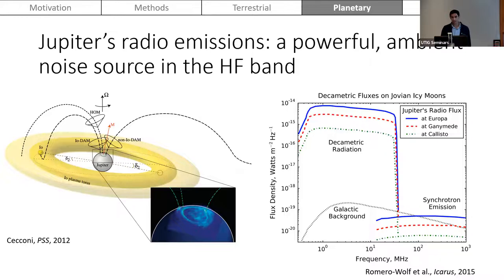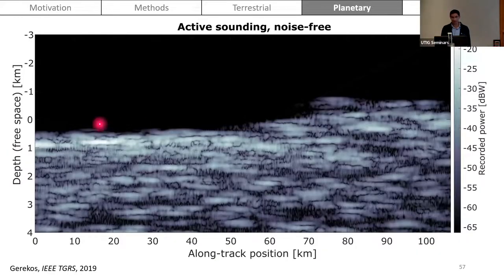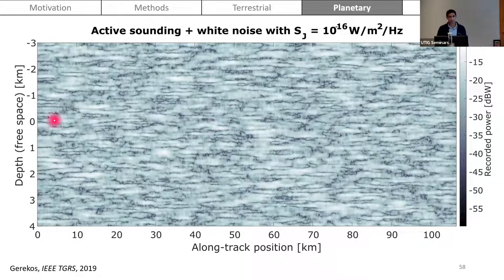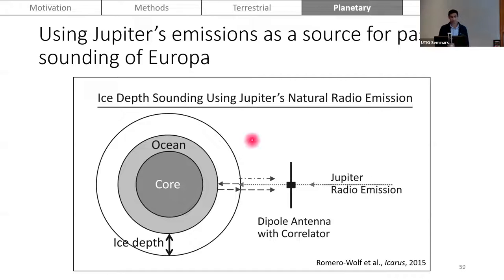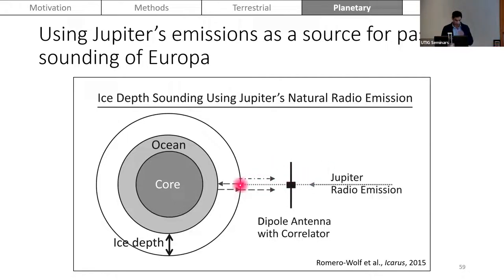If you consider the case where Jupiter is on and blasting its loud radio source, you could treat it like a jammer — you can no longer detect surface features. So instead of fighting Jupiter's radio emissions, one of my co-authors suggested using Jupiter's radio emissions as a source for passive sounding of Europa. The technique works similarly: a receiver on a spacecraft receives Jupiter's direct path, plus the path reflecting off the ice surface and ice-ocean interface. Using the same autocorrelation-based technique, you can extract both altimetric measurements for surface ranging and the ice-ocean interface depth.